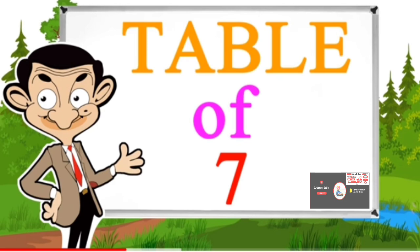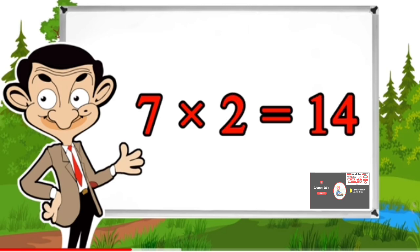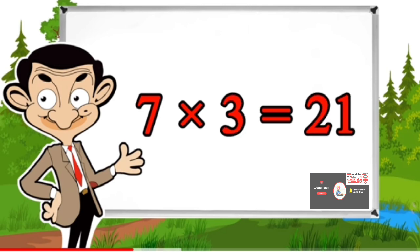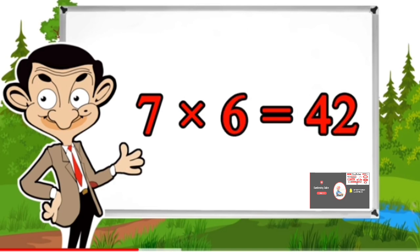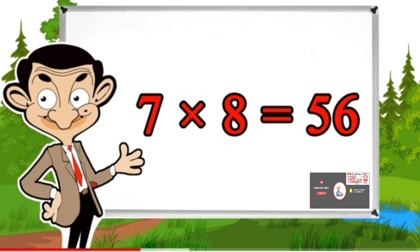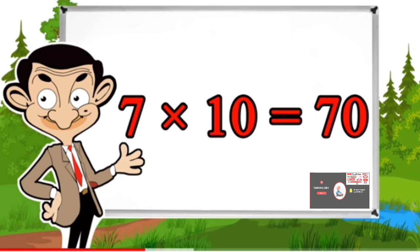Table of 7: 7×1=7, 7×2=14, 7×3=21, 7×4=28, 7×5=35, 7×6=42, 7×7=49, 7×8=56, 7×9=63, 7×10=70.